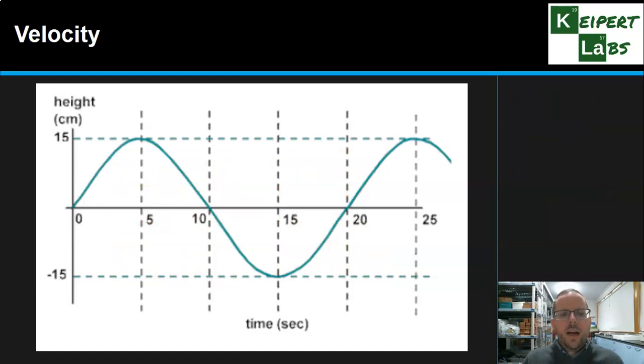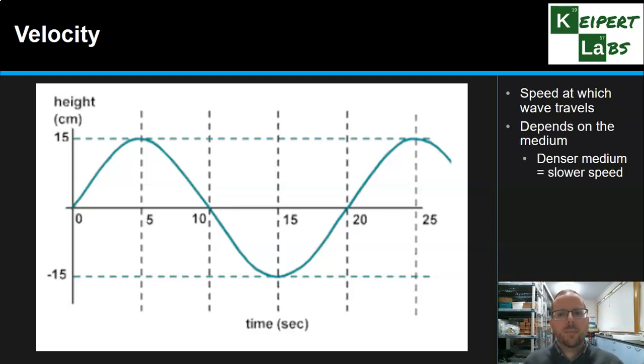And now we look at our last one, which is called velocity. So velocity is the speed at which the wave travels in its direction. So we're thinking about it's a measure of distance over time. Now velocity of a wave very much depends on the medium in which it's travelling, if it's a wave that is affected by the medium. So a denser medium, that is more particles of the substance that it's passing through, will slow down the speed of the wave.